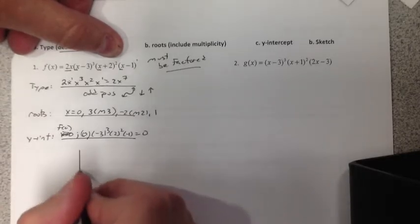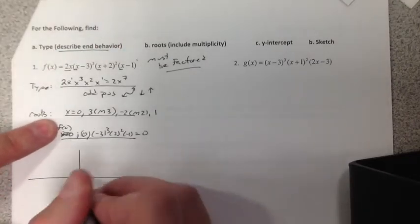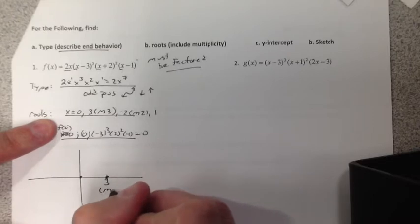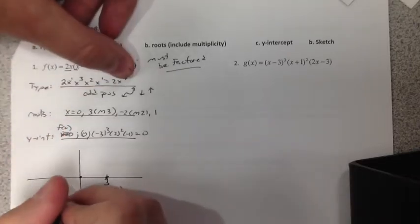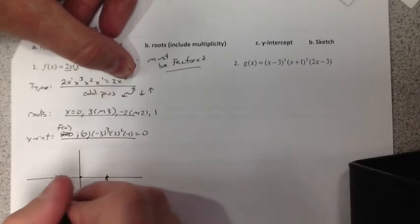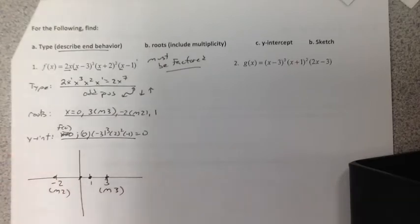So if I graph this now, we can sketch it. Looking at the graph, graph your roots first, 0, 3. Remember, that's m3, so I'm going to write it. Negative 2, that's m2, so I write it. And that, 1. And the y-intercept already graphed. How nice is that?